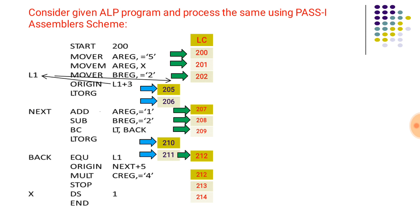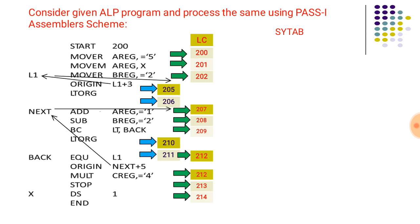The next statement has address 213. The next statement is ORIGIN next plus 5, which indicates the address should be next plus 5. Next is having address 207, and 207 plus 5 equals 212, so that address is assigned. Actually, the next assembly statement gets address 217. Then the next address is 213 and then 214. In this way the location counter generates addresses for the assembly language program.